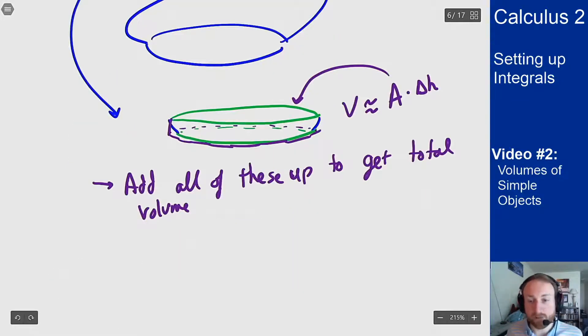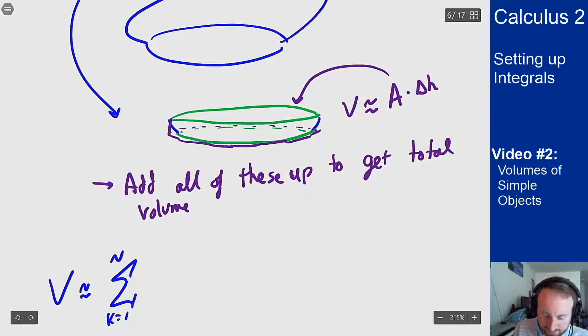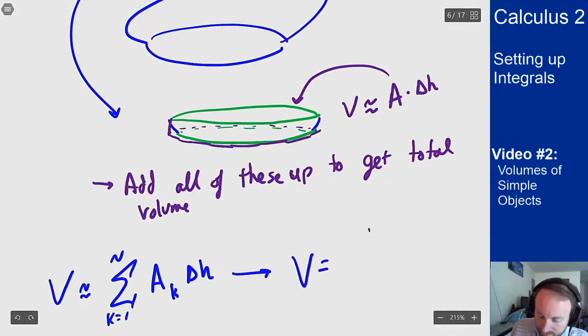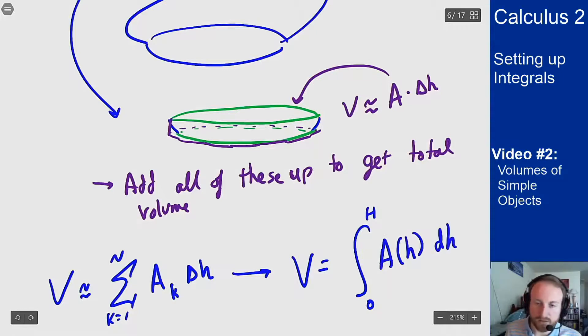So then I can approximate my total volume by a sum over these n slices, the area at the kth slice times delta h, which we've seen things like this before. As I take delta h to zero, as I get more and more and more slices, this goes to an integral. So the volume should then equal the integral over this object of the area as a function of height, dh.